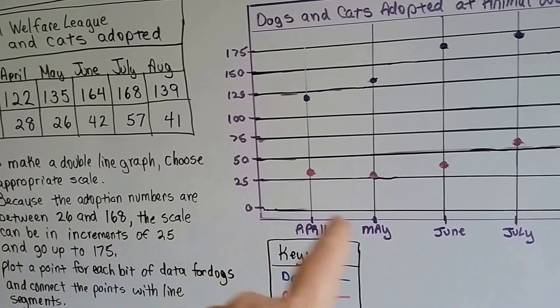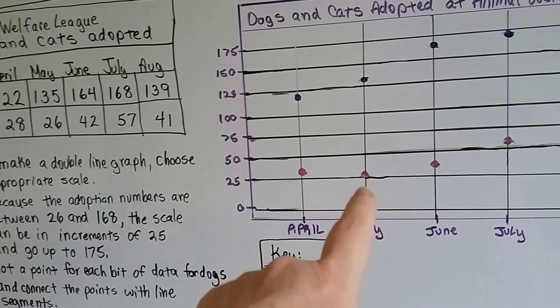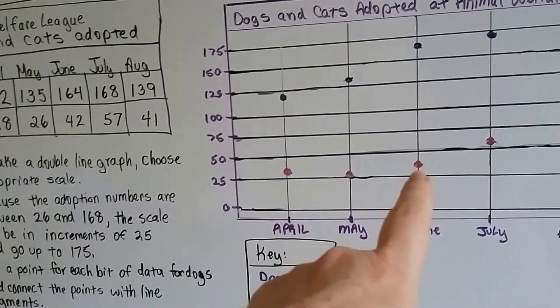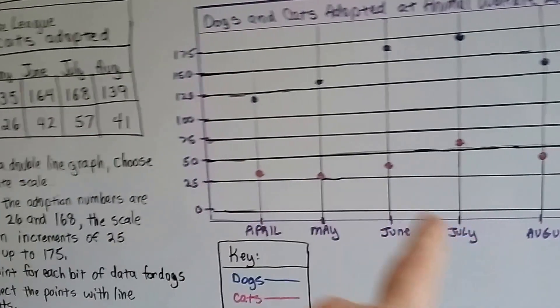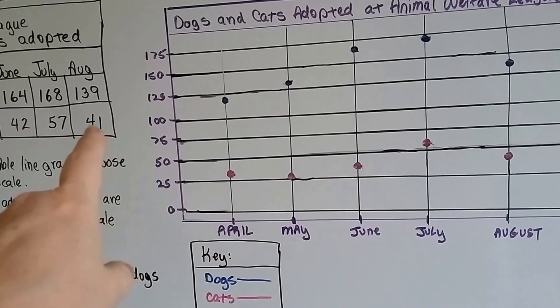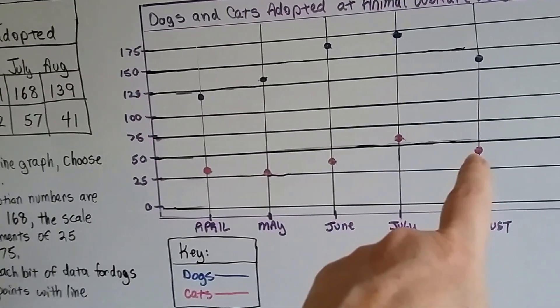In May it was 26, so we made it touching the 25 because it was just above it. June was 42, so we put it between 25 and 50. July was 57, so we put it above 50 but below 75. And August was 41, so we put it below 50.